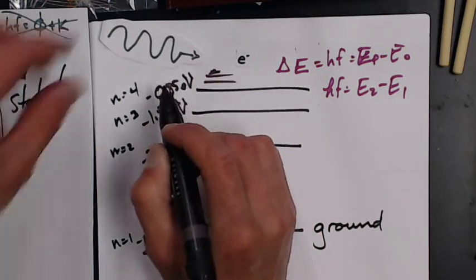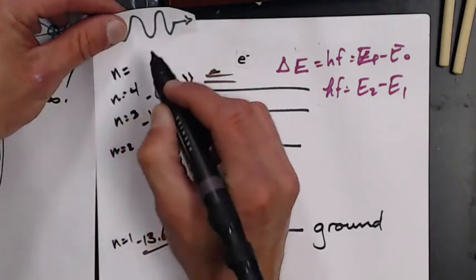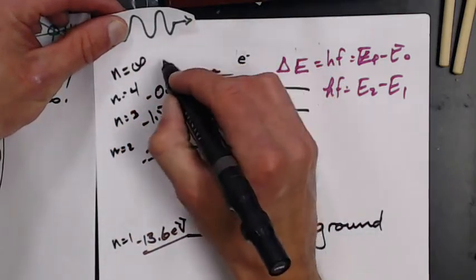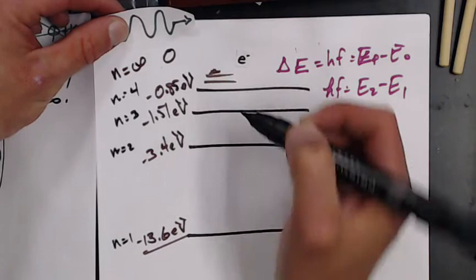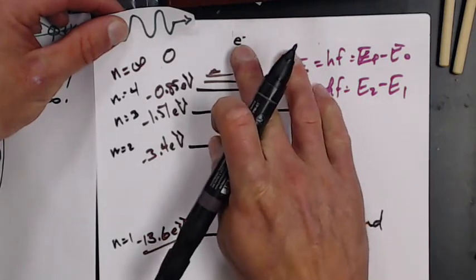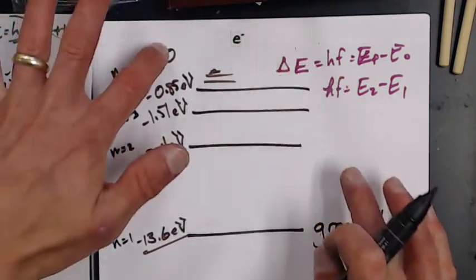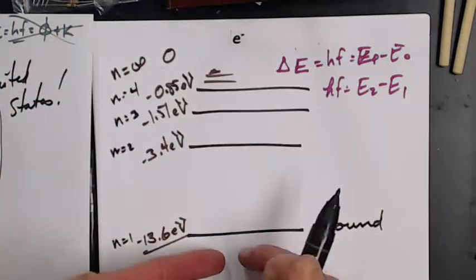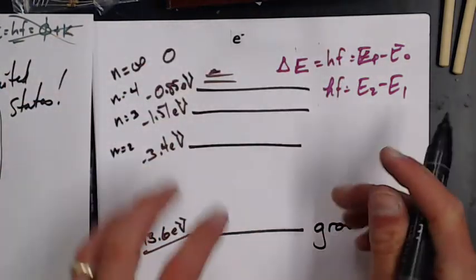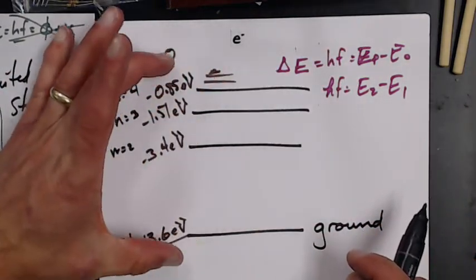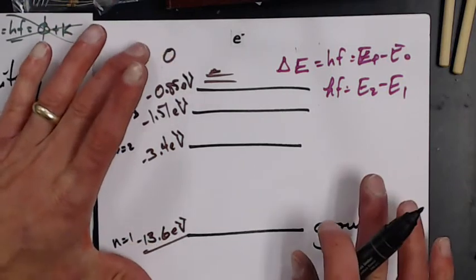So much so that at n equals infinity, the energy is zero. The free electron out here has no energy, so when it falls in it loses energy. The atom is like some sort of energetic well - it's like a sink of energy.